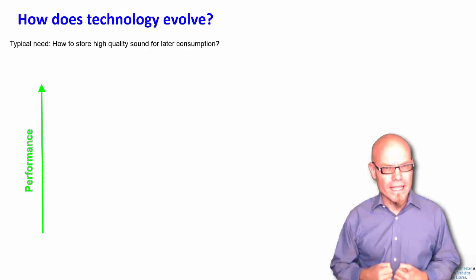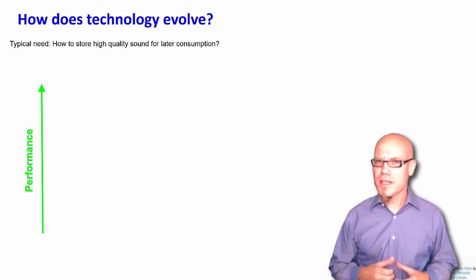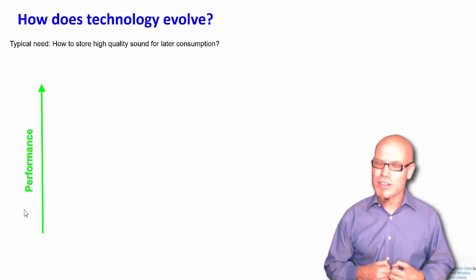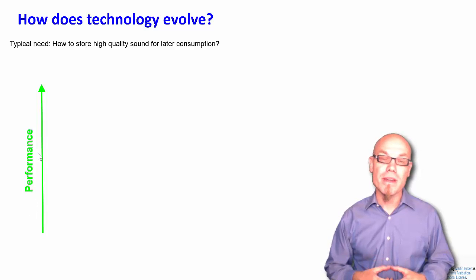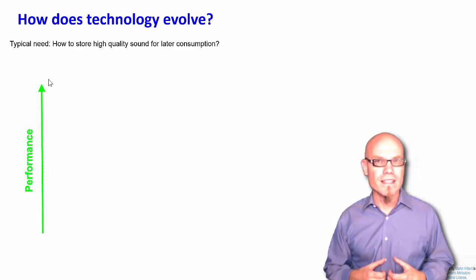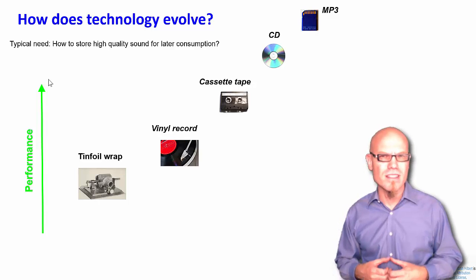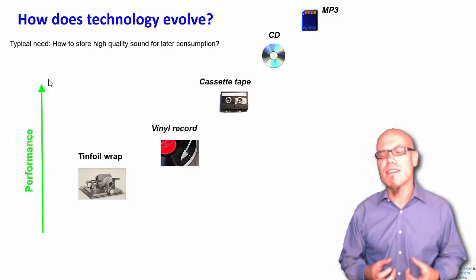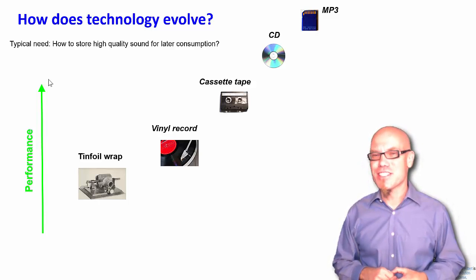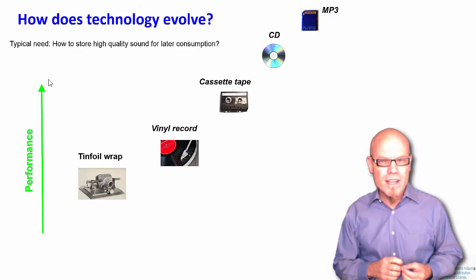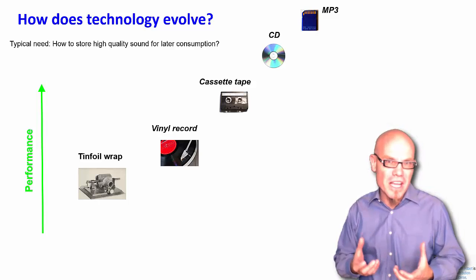Let's take a typical need, for example, how to store sound for later consumption. There's a typical need and we have a performance indicator on the y-axis here, and we hope that as technology evolves, the performance indicator goes up. There have been several different ways to address this typical need, starting with the tinfoil wrap, then the vinyl record, the cassette tape, the CD, the MP3. They are all derived from knowledge about the world and embedded in different physical structures. So the basic question is now, what is the trajectory of this technological evolution?